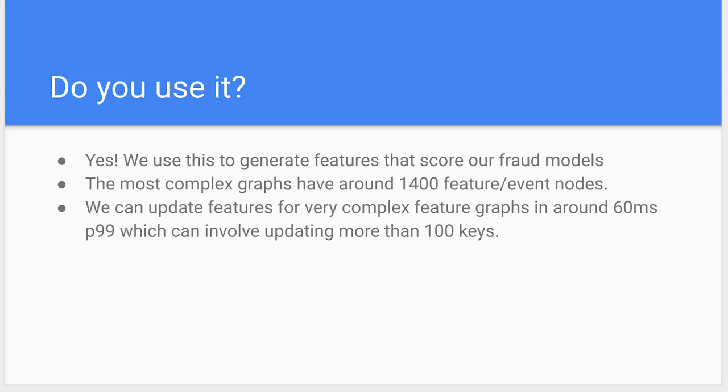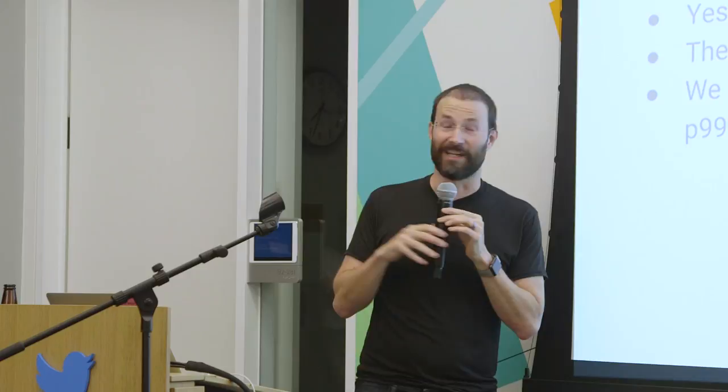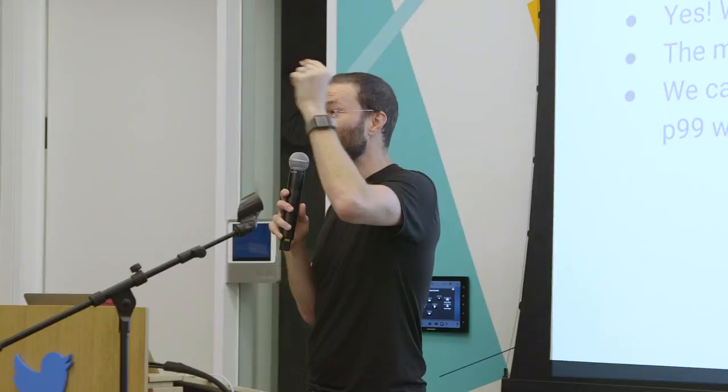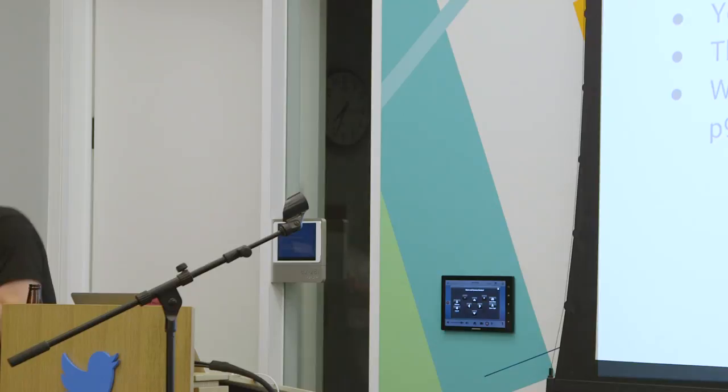The scatter-gather API is actually pretty cool. We're using it in production right now — even at this moment, people are buying things on Stripe and we're scoring it. It takes about 60 milliseconds for our most complex features. You might say 60 milliseconds is slow. But some of these graphs have 1,400 event and feature nodes with depth of 60 to 80 different operations — read this, map it to that, go to this store. From the standpoint of making a transaction, 60 milliseconds is not a very large portion of our budget, and if we can improve fraud protections for our merchants, 60 milliseconds is a bargain.